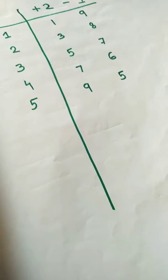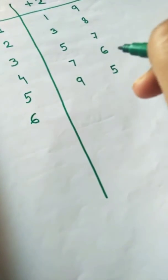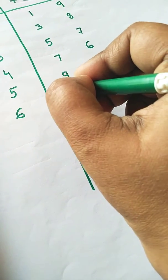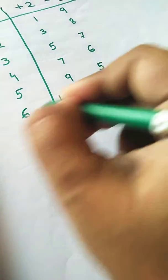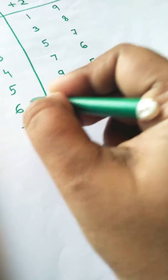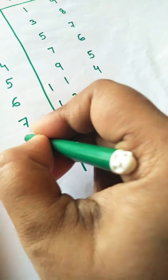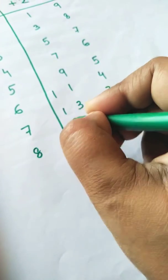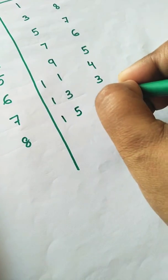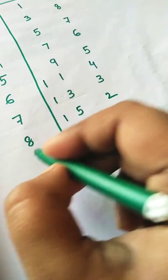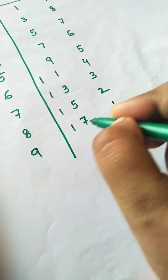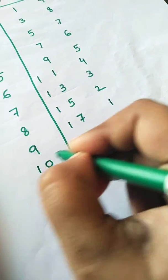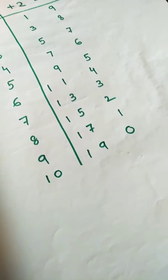19 fives are 95. 19 sixes are 114. 19 sevens are 133. 19 eights are 152. 19 nines are 171. 19 tens are 190.